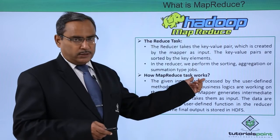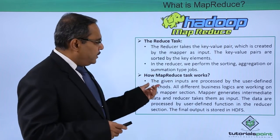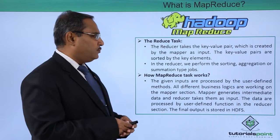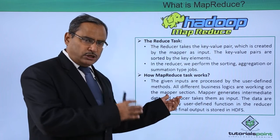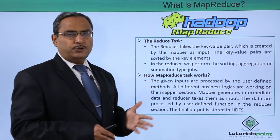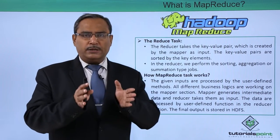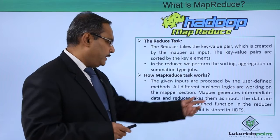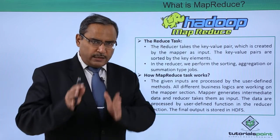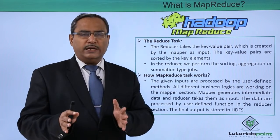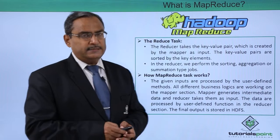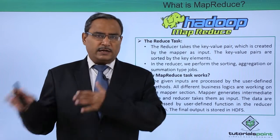How does a MapReduce task work? Let us go for the macro view of the system. The given inputs are processed by user-defined methods. All different business logics are working on the mapper section, and the mapper generates intermediate data which the reducers take as input. The data are then processed by the user-defined function in the reducer section, depending upon the business logic, and the final output is stored in HDFS — that is, the Hadoop Distributed File System.